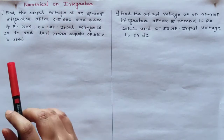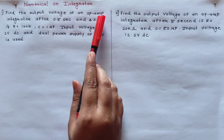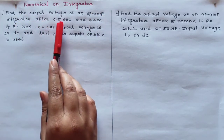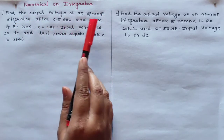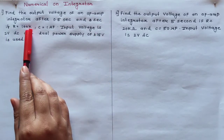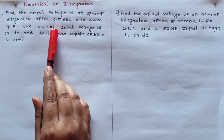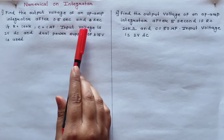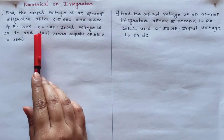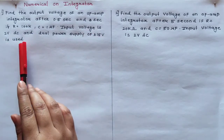Come to the first numerical. Find the output voltage of an operational amplifier integrator after 0.5 second and 3 second, if R is equal to 100k, C is equal to 1 microfarad, input voltage is 2 volt DC, and the dual power supply of plus minus 15 volt is used.